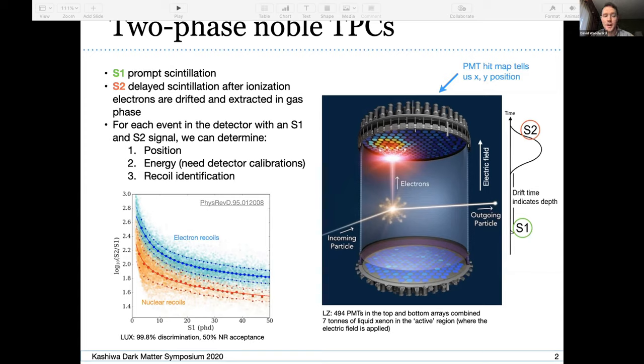We also get recoil identification, so we know if there was an electron recoil or a nuclear recoil by the ratio of the S1 and the S2 light. In the bottom left of this slide I'm showing some calibration data from the LUX experiment which shows the distinction between these two recoil populations quite clearly.